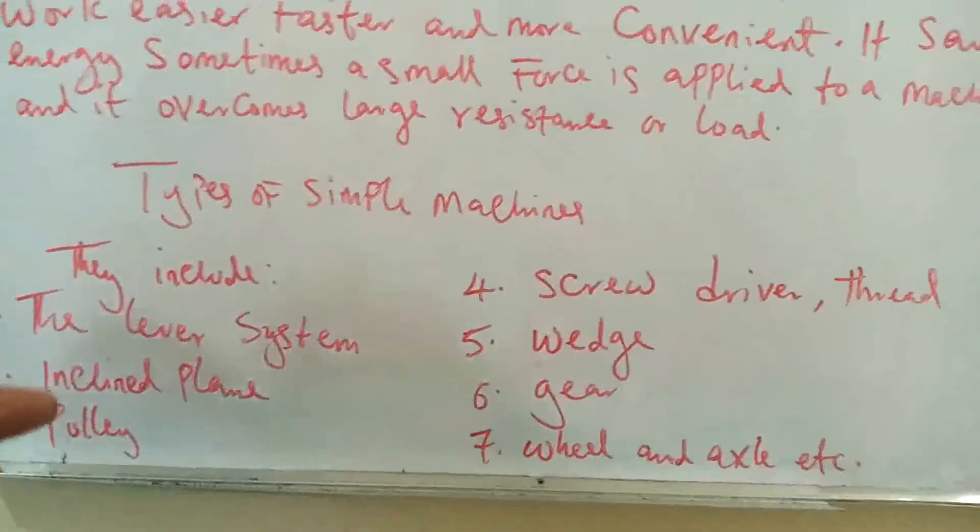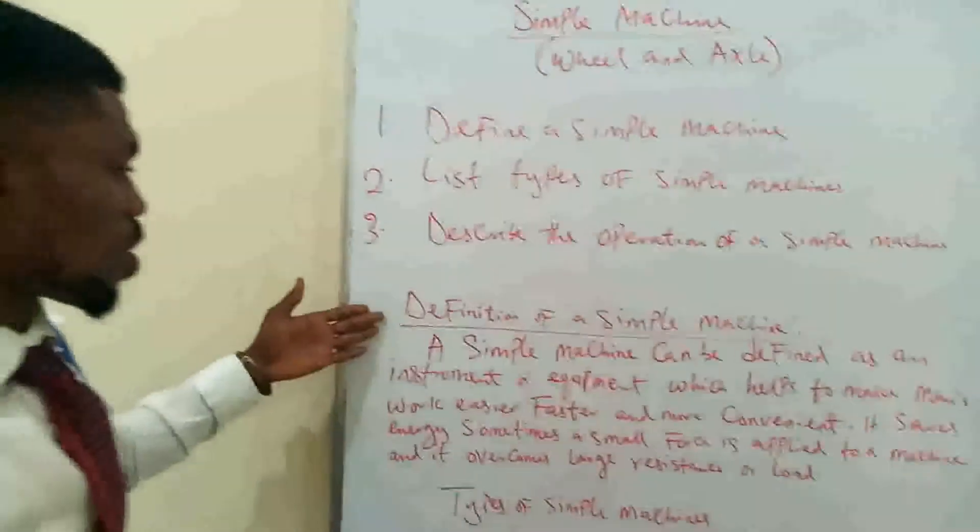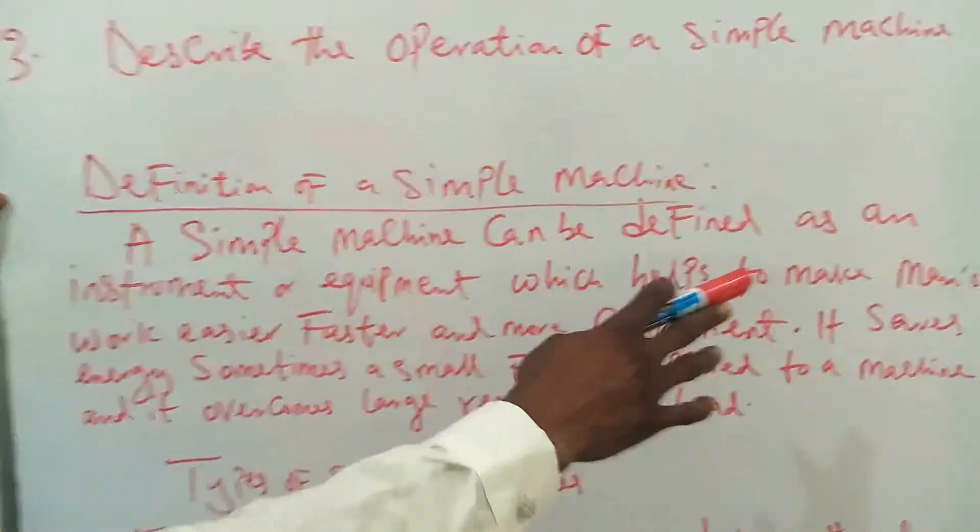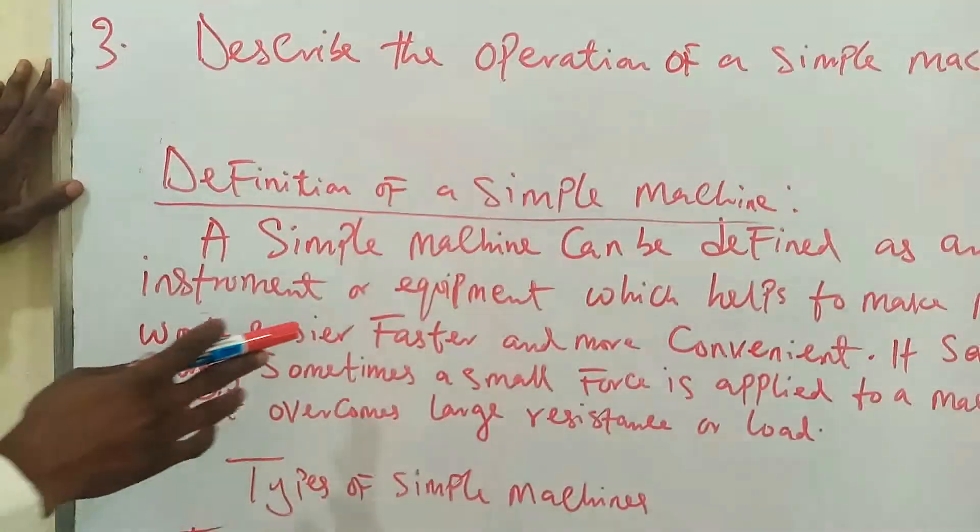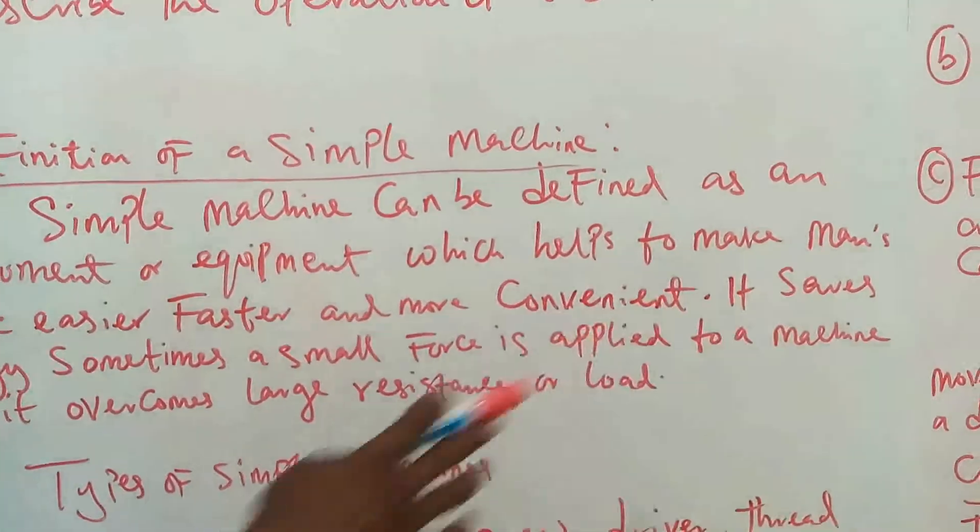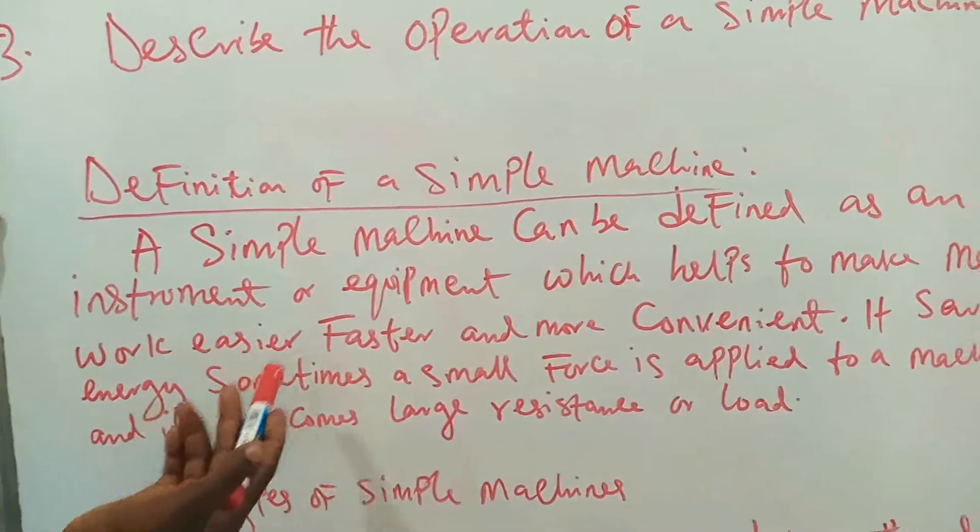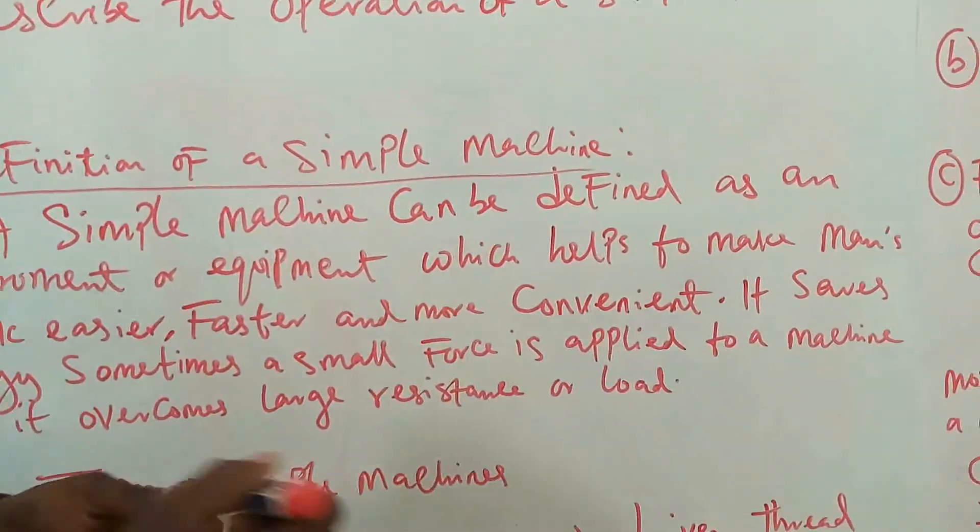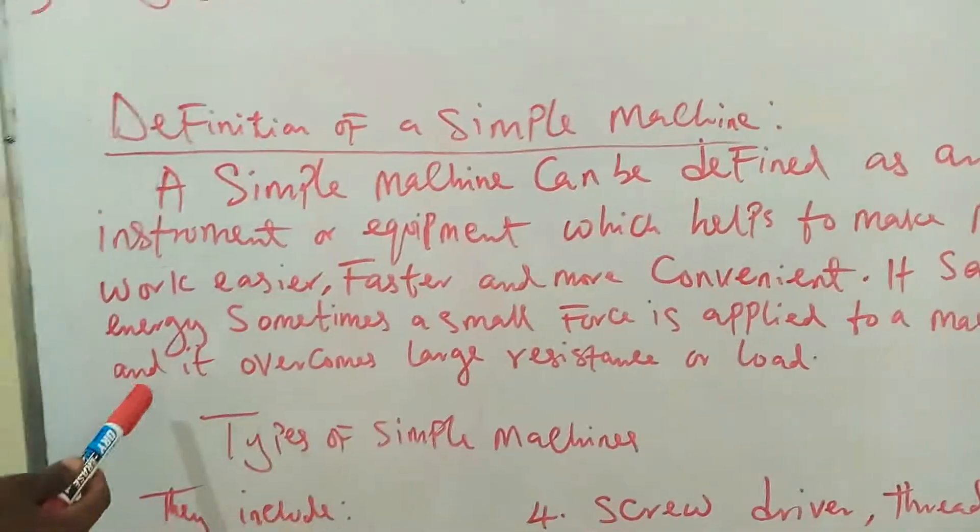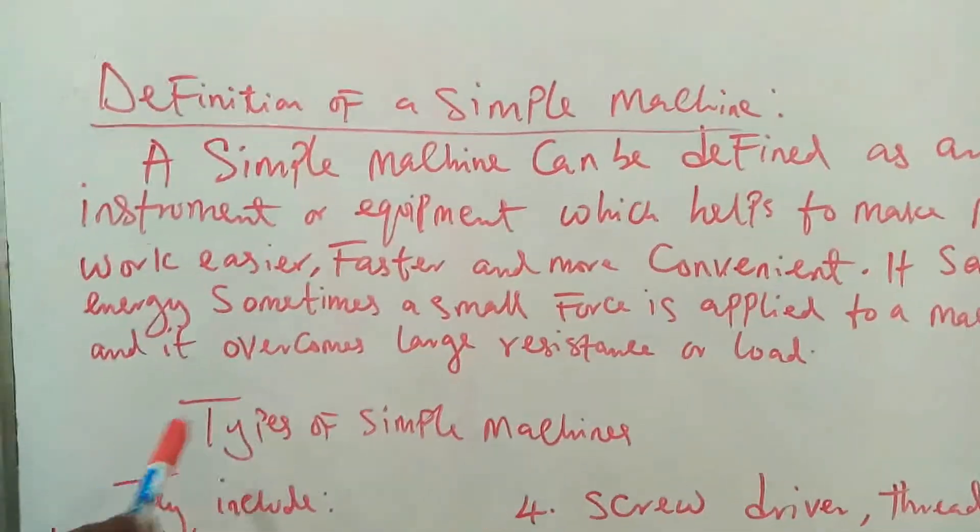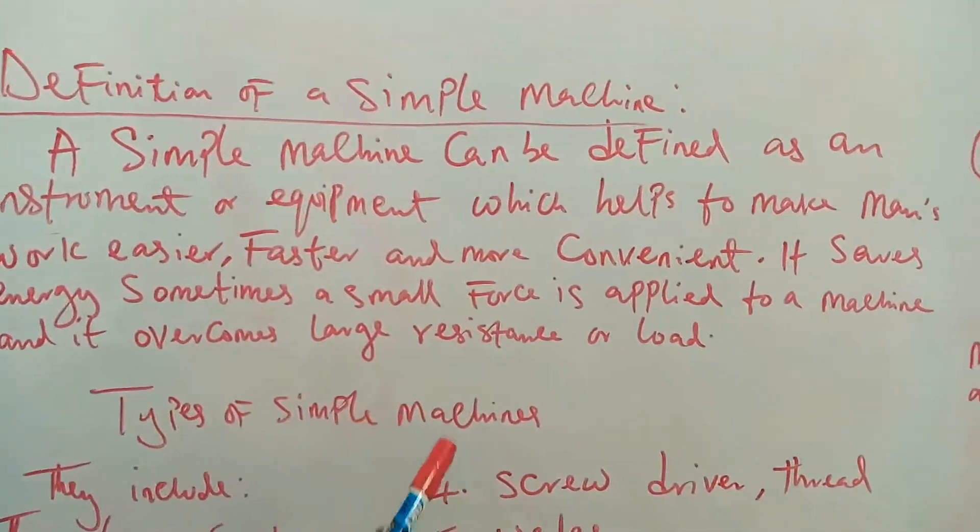But for better understanding, let us go back to our definition of a simple machine. Now, a simple machine can be defined as an instrument or equipment which helps to make man's work easier, faster, and more convenient. It saves energy sometimes.